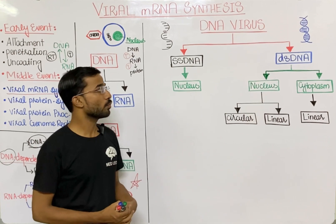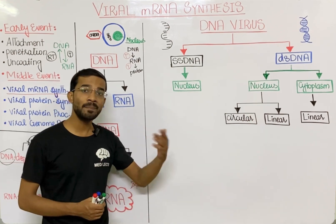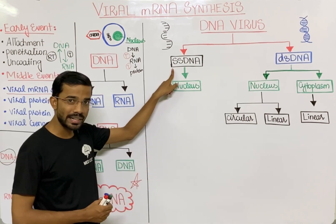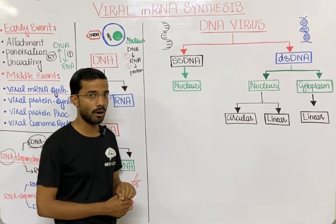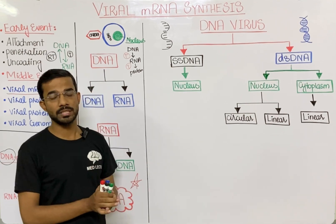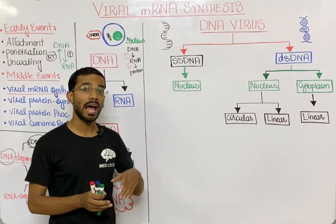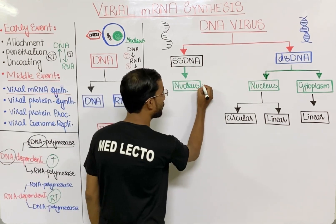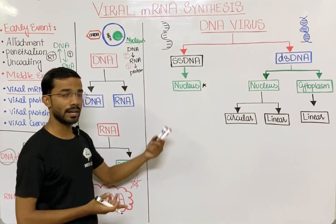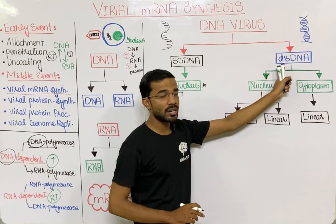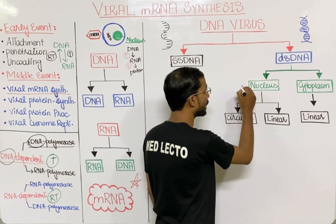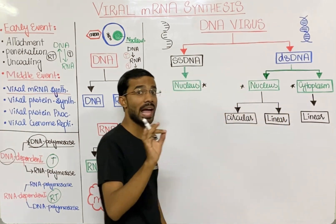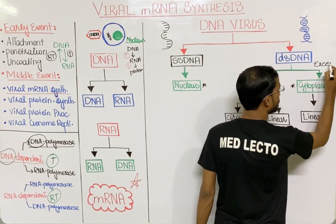In this lecture we will focus only on DNA viruses; in upcoming lectures we will cover RNA viruses. DNA viruses can have either single-stranded DNA or double-stranded DNA. For single-stranded DNA viruses, mRNA synthesis happens in the nucleus of the host. For double-stranded DNA viruses, most synthesize mRNA in the nucleus, but there is an exception where mRNA synthesis occurs in the cytoplasm.